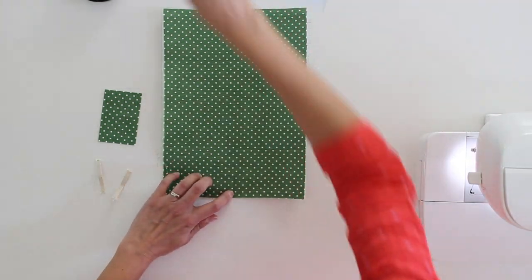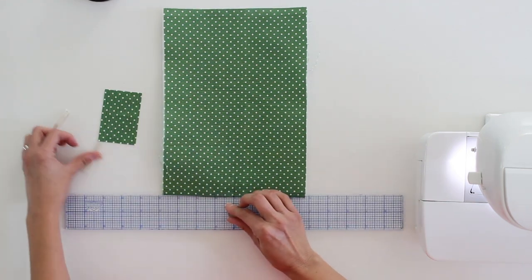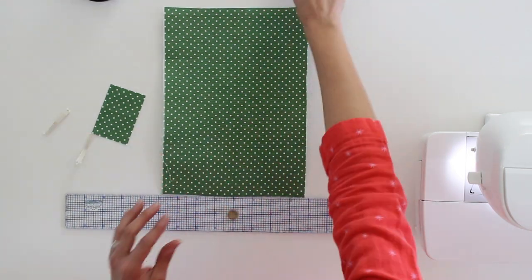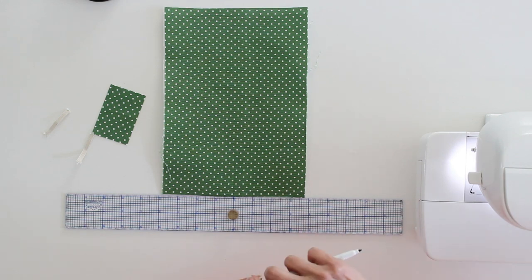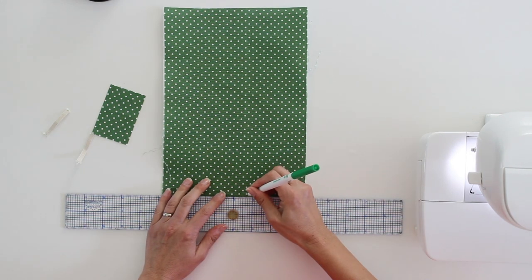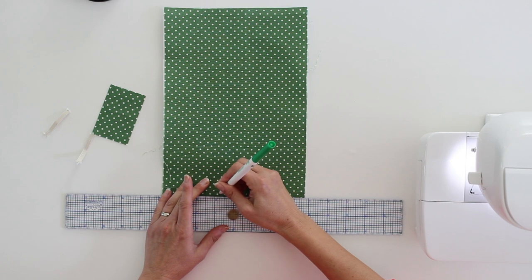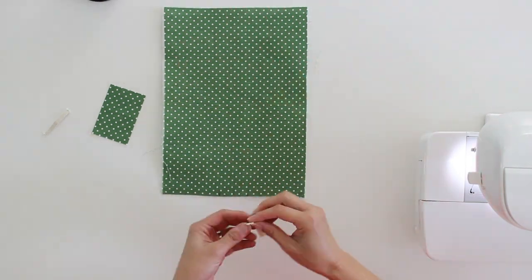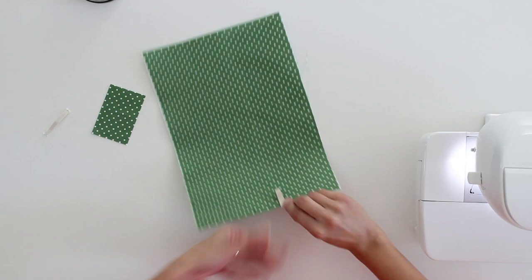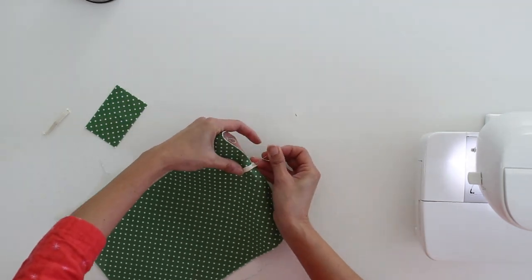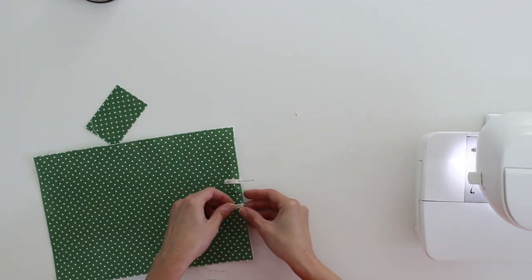On my size bow I need to mark three quarters of an inch to either side of that center. So I'm going to place a mark here and a mark here. And then what I need to do is on those marks I am putting elastic and I'm going to baste that in place.